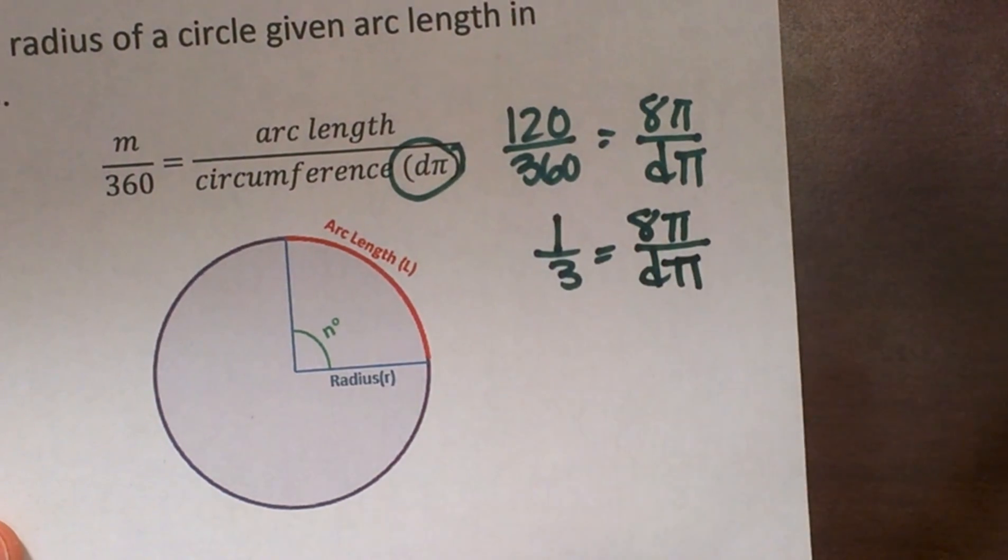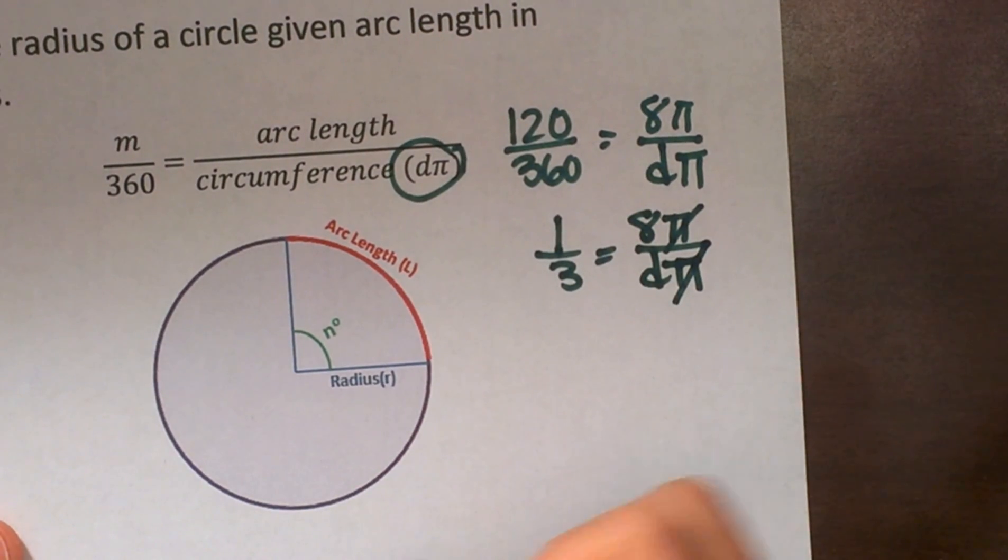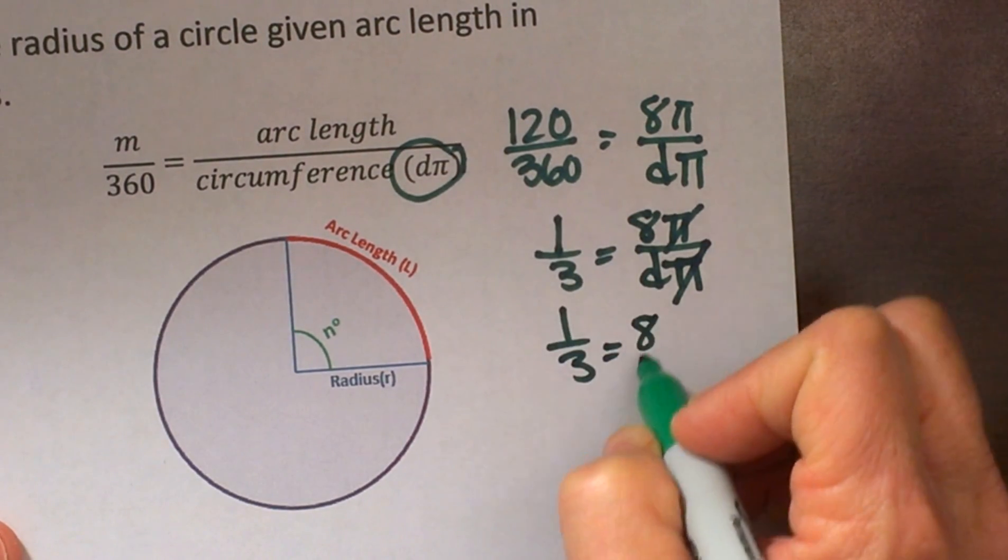Now what else can we simplify? Well you can see the π's will just cancel out because π over π is 1. So we have one third is equal to 8 over d.